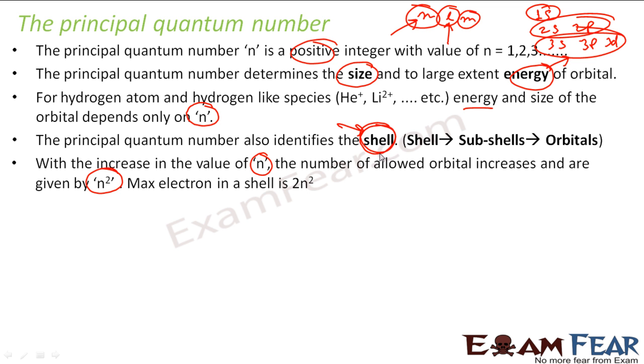For a given principal quantum number n, the number of orbitals for that will be n². And the maximum number of electrons in that shell will be 2n², because one orbital will have 2 electrons.